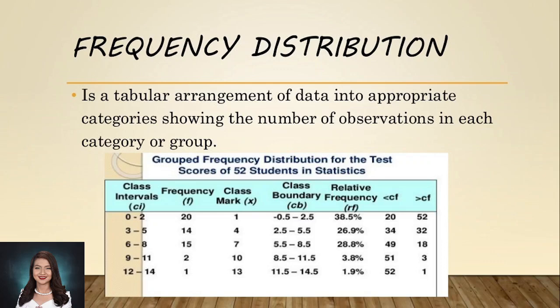Now let's talk about frequency distribution. Frequency distribution is a tabular arrangement of data in the appropriate category showing the number of observations in each category or group. Let's take a look at this frequency distribution for the test scores of 52 students in E-statistics. We have here columns for class intervals or CI, the frequency or F, the class mark or X, class boundary or CB, relative frequency or RF, the less than cumulative frequency, and the greater than cumulative frequency. Later on, we will discuss how to compute these parts of the frequency table.